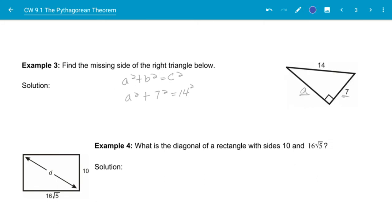And so I'm going to have A squared plus 49 is equal to... 14 squared is 196. And then I can subtract 49 from both sides and say 196 minus 49. And I get A squared is equal to 147.